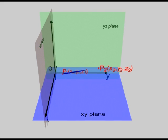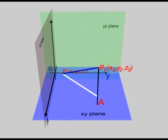We will determine the length of the line segment between points P1 and P2. From P2 draw a line perpendicular to the xy plane. It intersects the plane at point A. From P1 draw a line perpendicular to P2A. They intersect at point B.